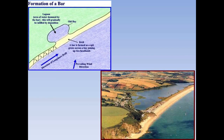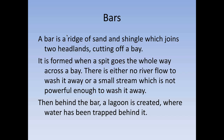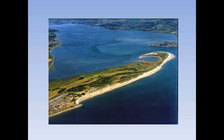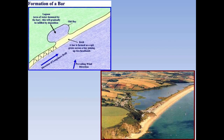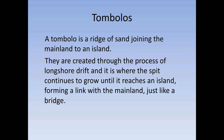Bars basically go all the way across - there is no big powerful river here, so there is nothing to wash the deposited sediment away. Your longshore drift can just keep going and it joins one headland to the next headland completely, and then you get what's called a lagoon behind it. So the only difference is: spits do not go all the way across because you've got a big powerful river stopping that; bars go all the way across. A really famous example in South Devon is Slapton Ley, so you can actually go and visit a bar.